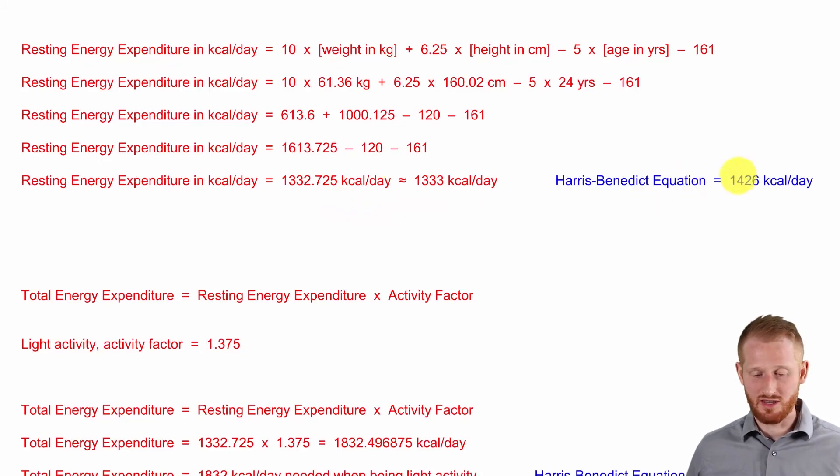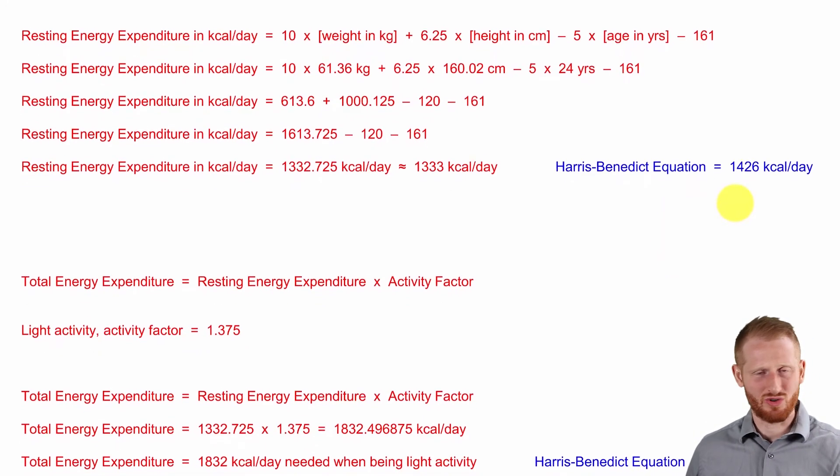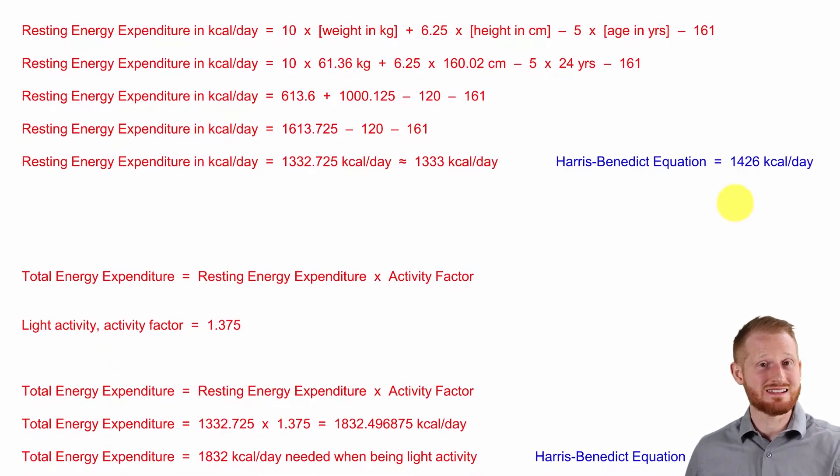So there is a bit of a difference there. Again, a slightly over-exaggeration from the Harris-Benedict equation, which is a much older equation. It's actually from 1919. So it's more than 100 years old. So there's a number of reasons why some people don't particularly love that equation, but it is still commonly used today.